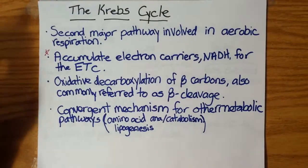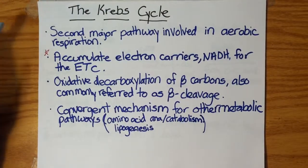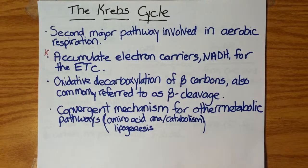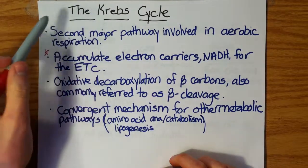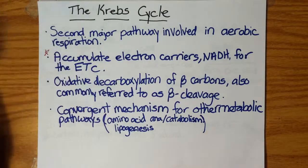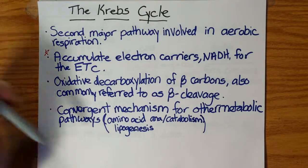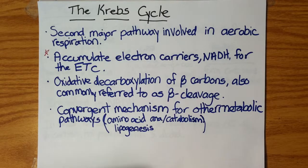Welcome back to the Science Corner. We are working our way through the metabolic pathways needed to perform oxidative phosphorylation, and we left off with the Krebs cycle. We have converted pyruvate into acetyl-CoA by the pyruvate dehydrogenase complex and gotten the acetyl-CoA into the matrix of the mitochondria.